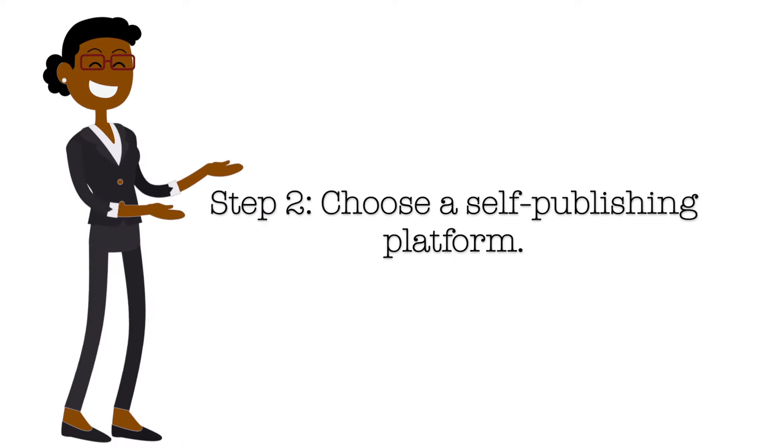Step number two is to choose a self-publishing platform. Once you have a completed and polished book, you need to choose a self-publishing platform to publish your book through. There are a lot of different choices including Amazon Kindle Direct, IngramSpark, and also Lulu. Making a decision is really going to be dependent on your goals as a writer.